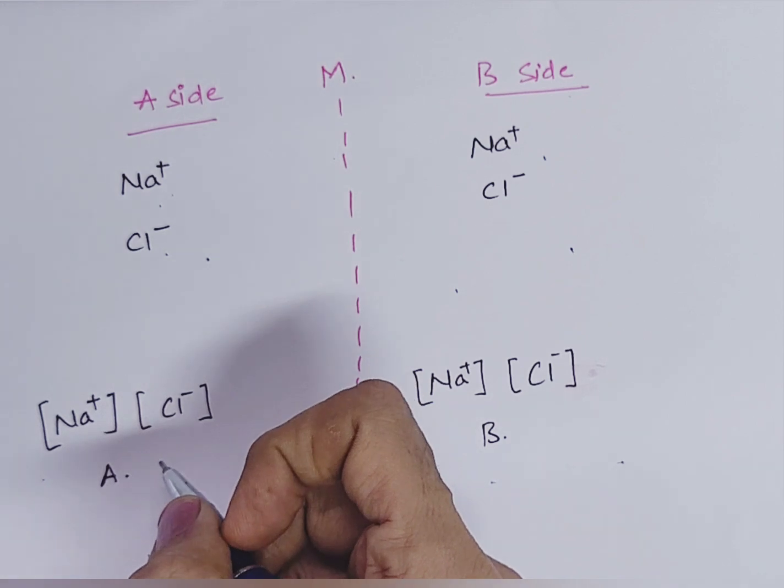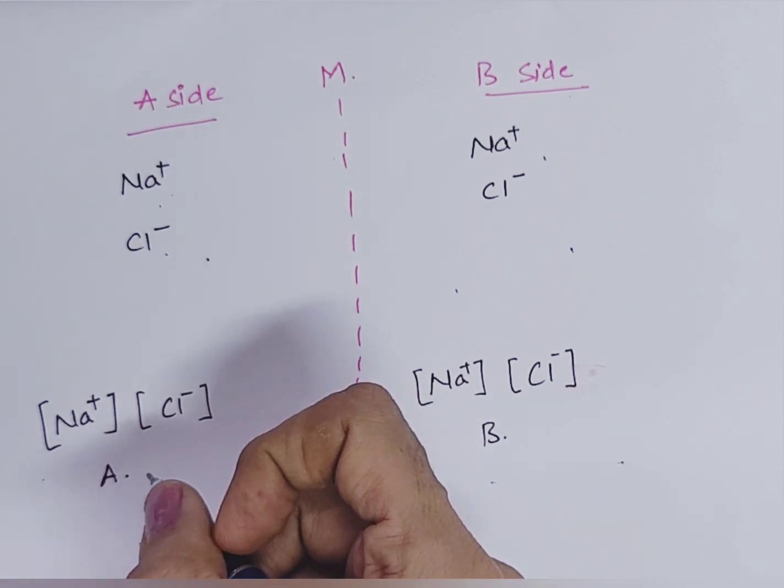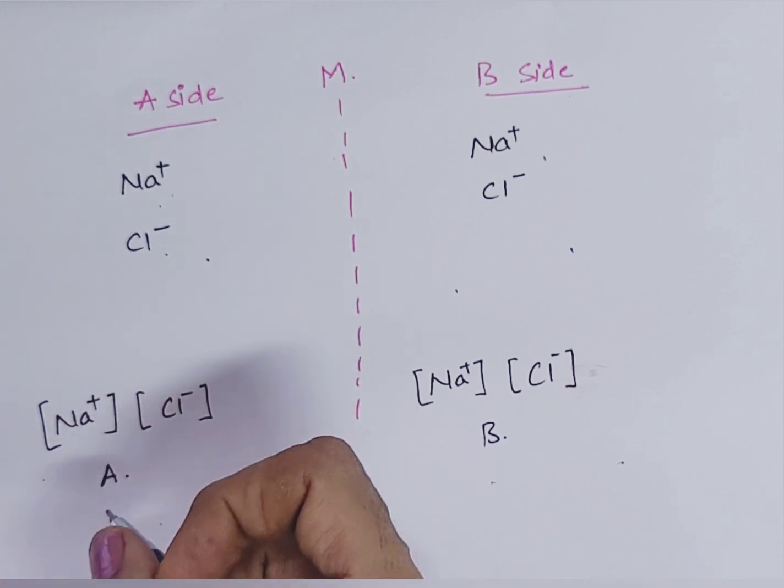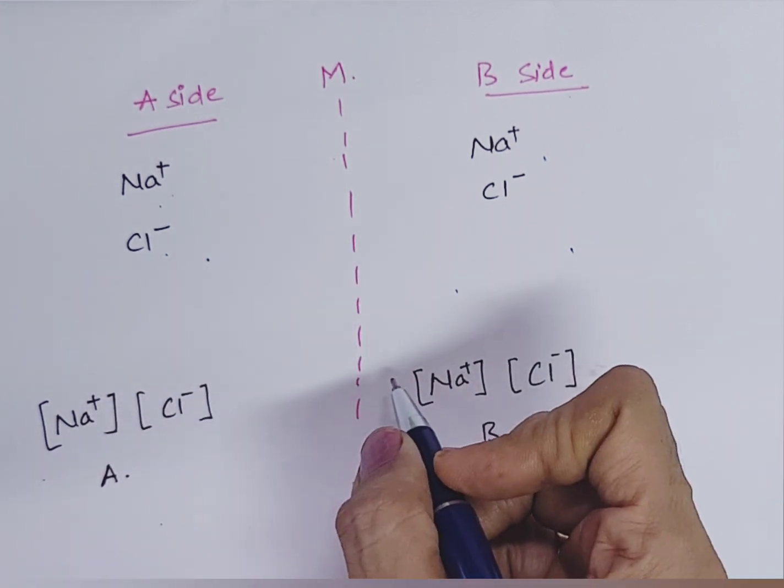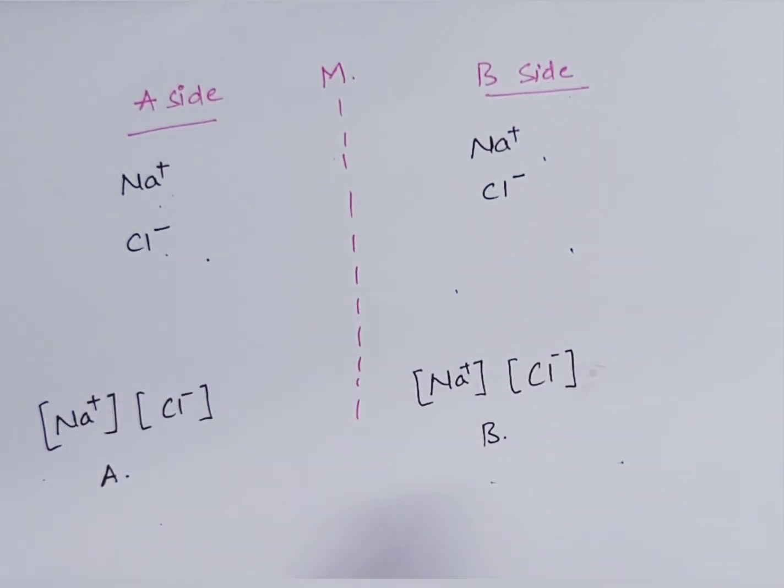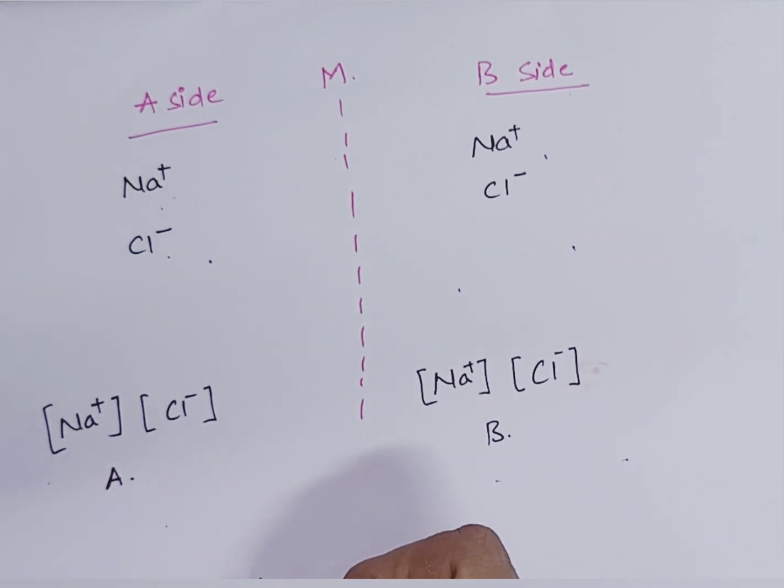Now, what happens if any non-diffusible ion is added here? When one or more ions which cannot pass are added to one side, what will happen? That we will discuss.